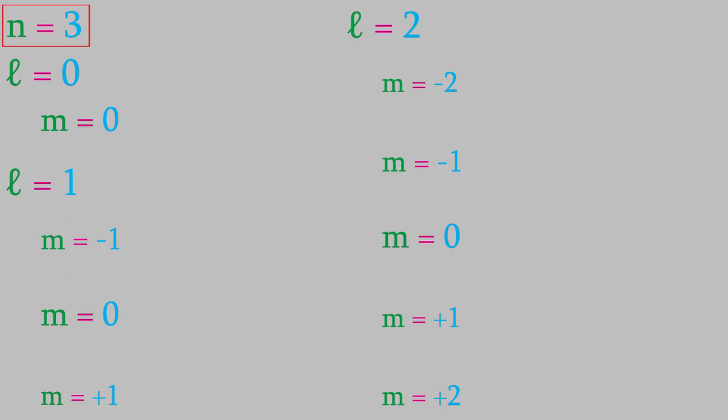Finally, for each of those combinations, S could have a value of negative one-half or positive one-half. So, altogether, you can see that there are quite a few different possibilities, 18 of them in all. Of course, if we had started with a different value for n instead of n equals three, we'd have a different list.